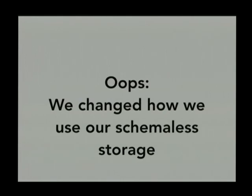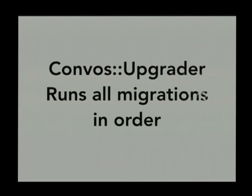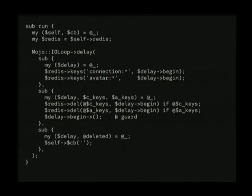The next problem was schema-less design. It's great to have MongoDB or Redis where you don't have to design schemas, but once you try to change them you need a way of dealing with that. So we built Convos Upgrader — it runs all your migrations in order. Every time we change the schema, we update all data to match the new schema. It's similar to migrations in other frameworks — we define a set of jobs and the order to run them.